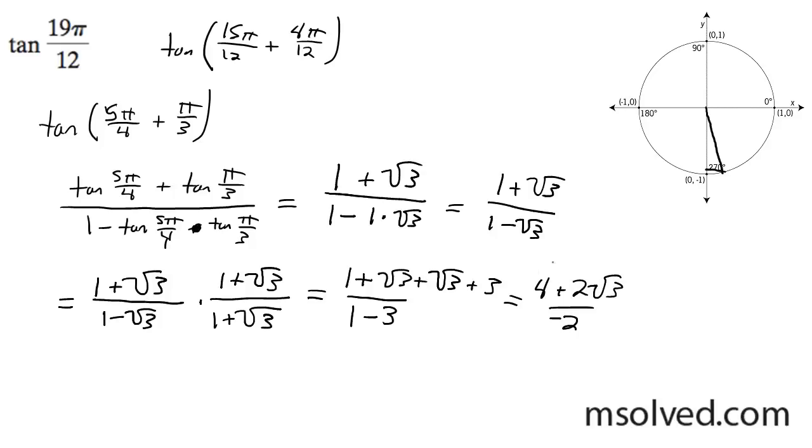I can divide through by negative 2, and my final solution is going to be, I'm going to distribute this negative sign out, so negative 2 minus root 3.